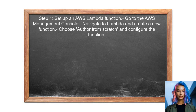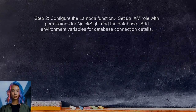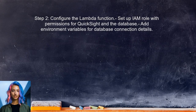To automatically refresh AWS QuickSight whenever new data is loaded, you should first set up an AWS Lambda function. This function will be triggered whenever new data is added to the database. Next, configure the Lambda function to connect to the data source — this involves setting up the necessary permissions and environment variables to access the database.